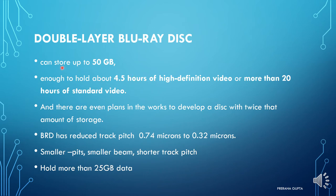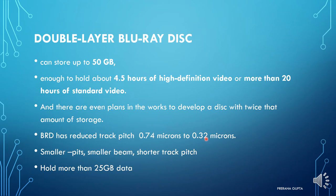A double layer Blu-ray disc offers 50 GB of data — 4.5 hours of high definition video and 20 hours of standard video. There are even plans to develop a disc with twice that amount of storage, exceeding 50 GB. Blu-ray disc has a reduced track pitch of 0.32 microns compared to 0.74 microns in DVD, with smaller pits and smaller beam size, allowing a single layer to hold more than 25 GB.